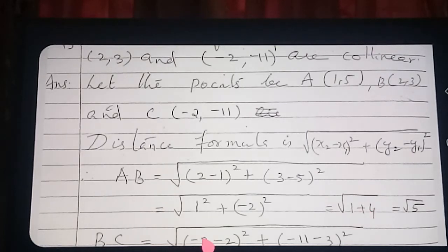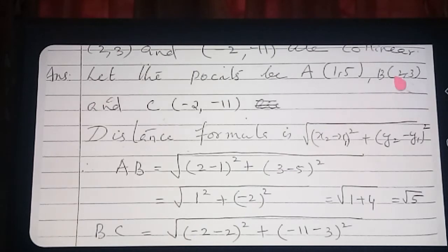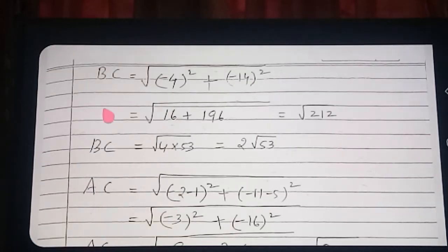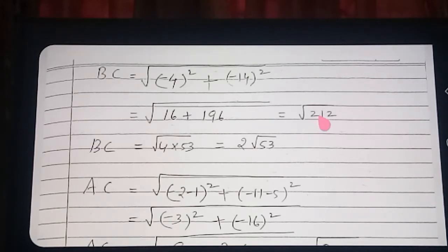Now we will find out the value of BC. So BC: X2 is -2 and X1 is 2, so (-2 minus 2) whole square plus (-11 minus 3) whole square. That gives (-4) squared plus (-14) squared, which is 16 plus 196 equals 212. So BC is equal to root of 212, which is 2 root 53.